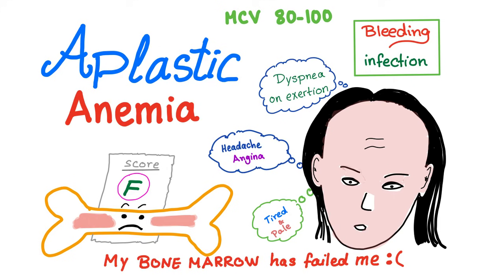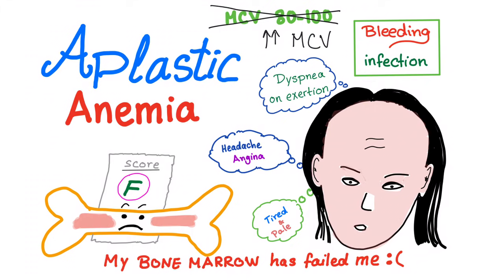I would like to note something. Aplastic anemia is supposedly a normocytic anemia. However, MCV is not really 80 to 100. It's usually more than that, so MCV is usually high and we will discuss that soon.